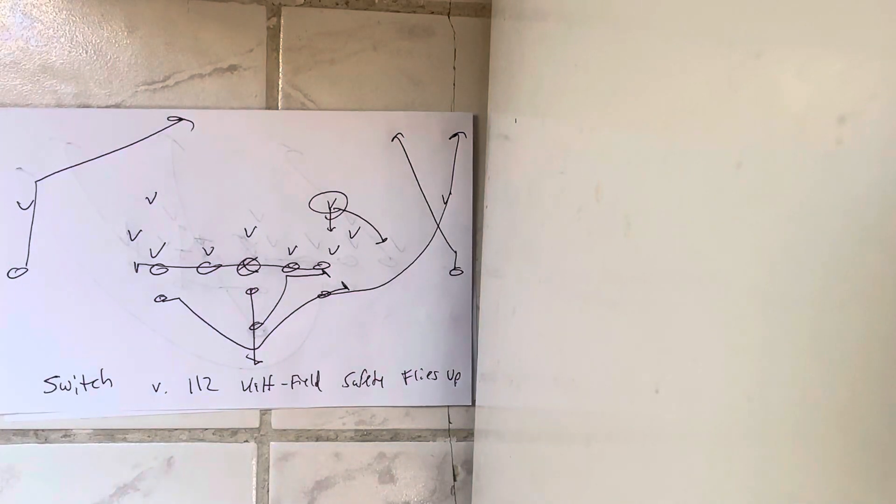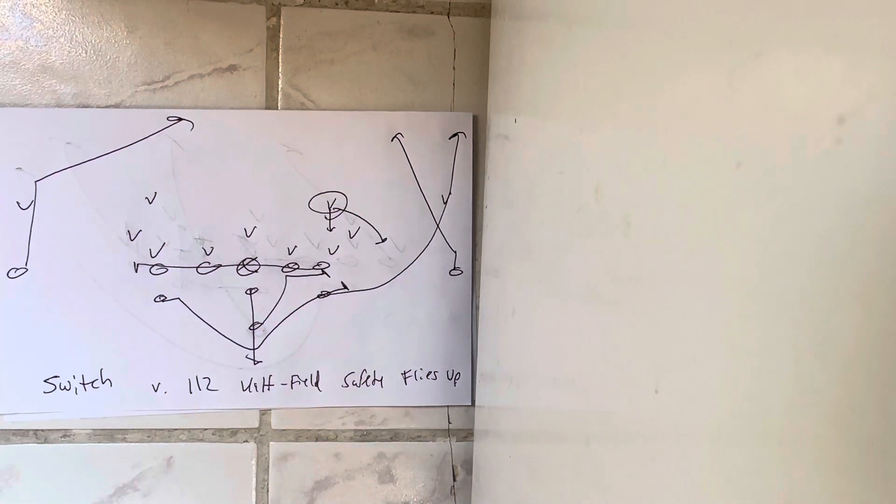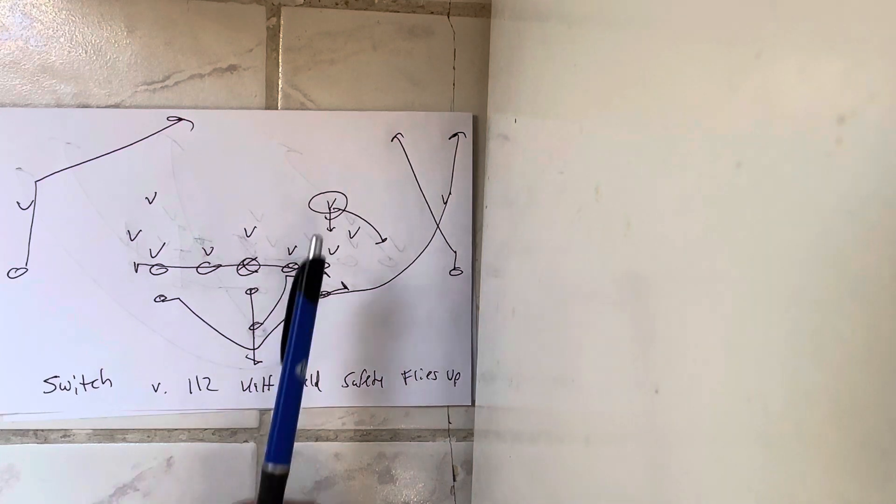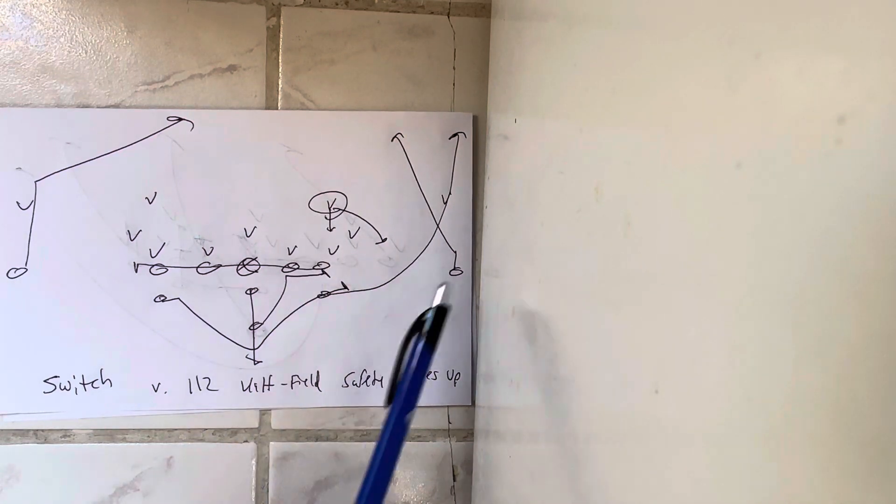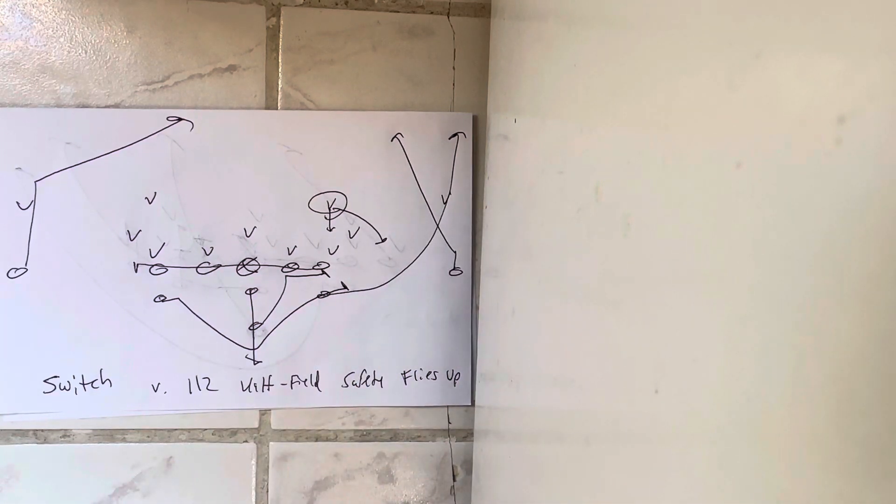Dr. Sella here, and I've said this to so many clients: when you play a team with two high safeties and the half-field safety flies up, the goal is not to take advantage of the half-field safety. The goal is to take advantage of the corner who is in an impossible position at this point.